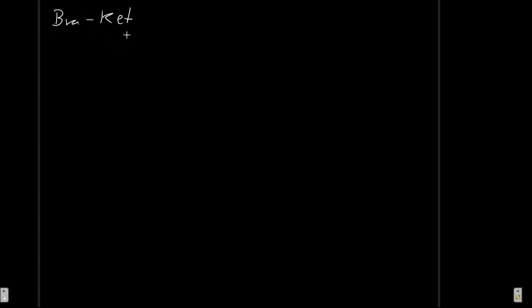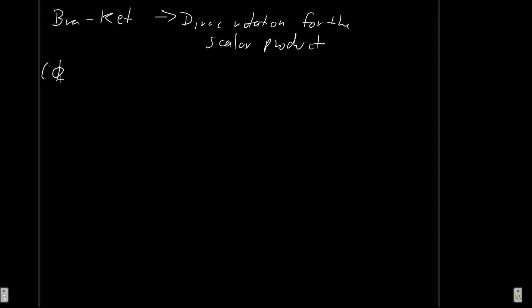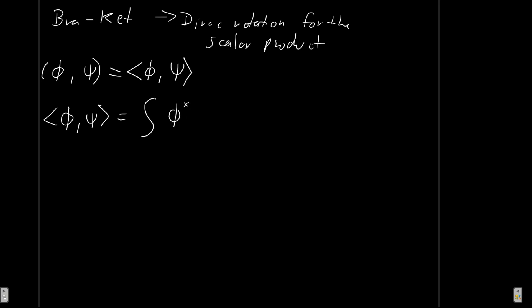Since they are state vectors, you can work with them as we'll do in some other videos. But for now we will discuss the bracket, which is what you get when you put them together. The bracket is the Dirac notation for the scalar product. So what we used to write as phi, psi we will now write as the bra of phi comma the ket of psi. In coordinate representation, if these are complex functions, we could write this as the integral of phi conjugate times psi integrated over all of space.